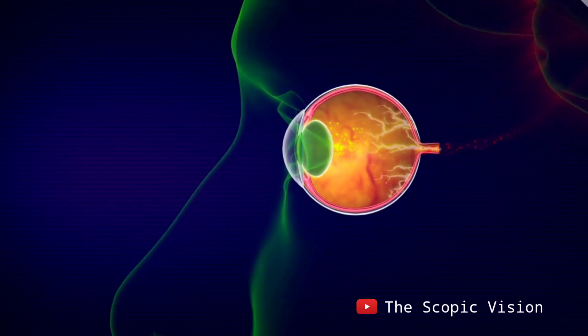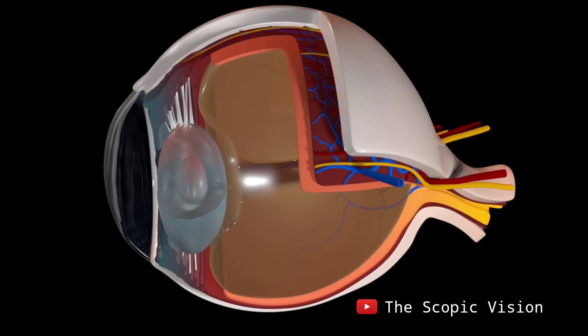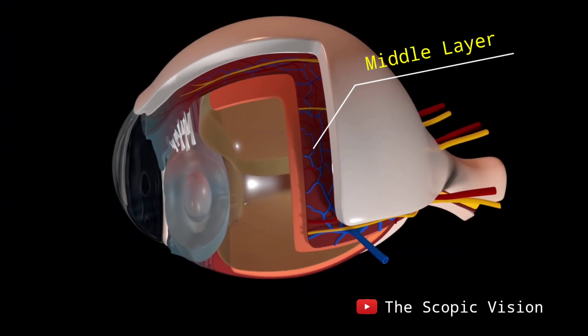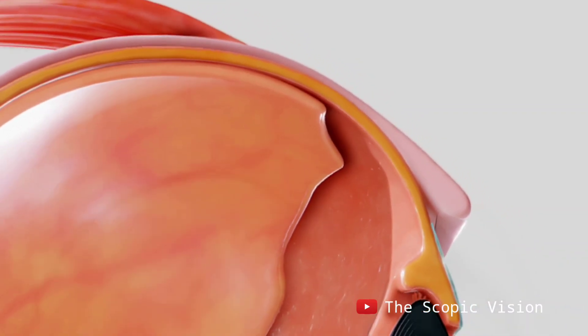The middle layer is vascular, providing blood vessels to the eye. This layer contains the choroid, ciliary bodies, and iris.